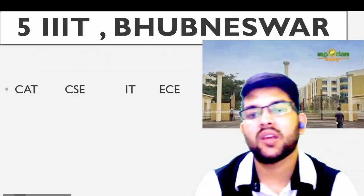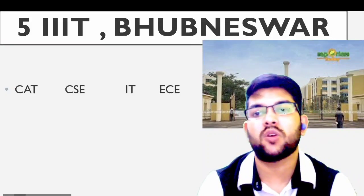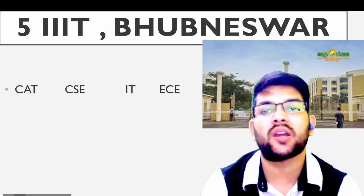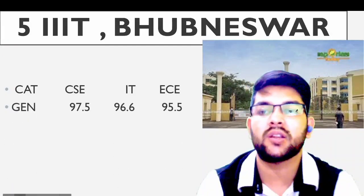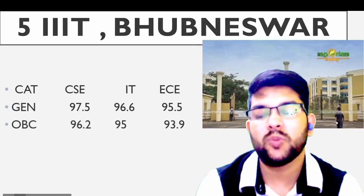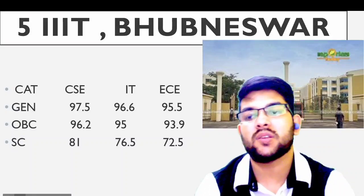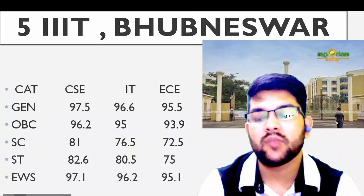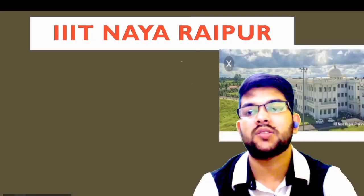Next is IIIT Bhubaneswar. Note: this is the International Institute of Information Technology, not the Indian Institute, which is why it is classified as a GFTI. For General: 97.5, 96.6, 95.5; OBC: 96.2, 95, 93.9; SC: 81, 76, 72; ST: 82, 80, 75; EWS: 97, 96, 95 percentile.